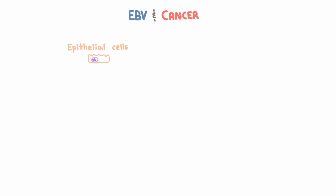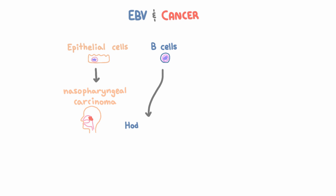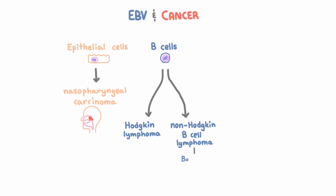What kinds of cancer does EBV cause? Just remember the cells that EBV infects. Epithelial cells, so that can lead to nasopharyngeal carcinoma. B cells, which can lead to Hodgkin lymphoma and non-Hodgkin B cell lymphomas, especially Burkitt's lymphoma. And T cells, which can lead to T cell lymphomas.